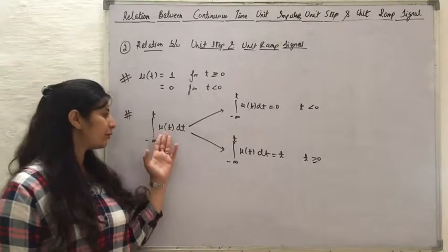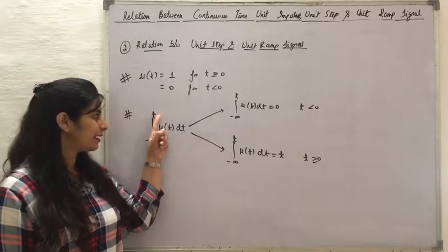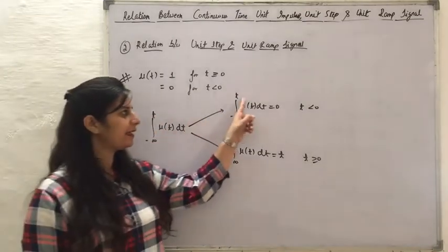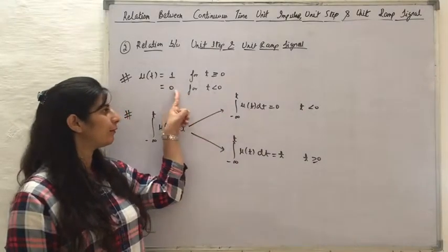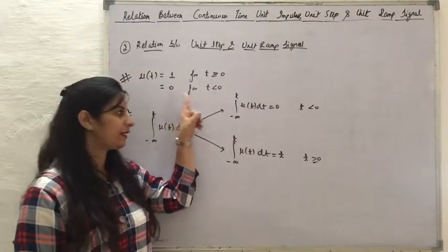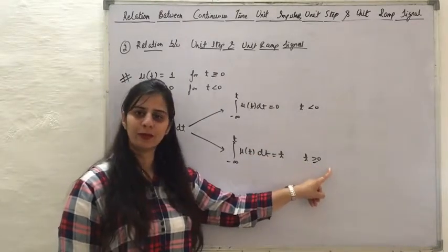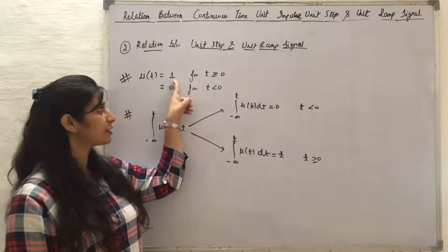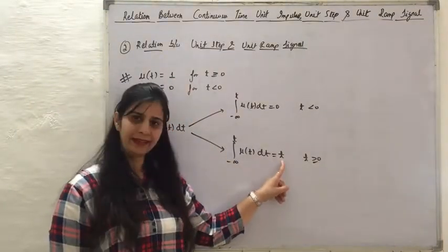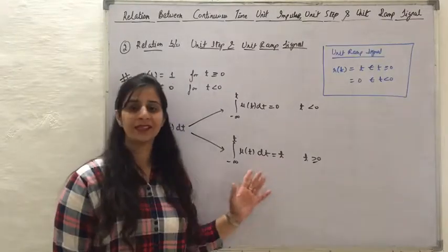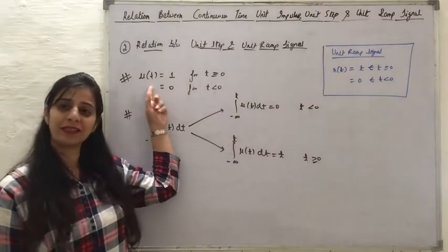When we apply integration on this unit step signal with a limit t: when t is less than 0, the value of the function is 0, so the integration will also be equal to 0. When t is greater than or equal to 0, the value of the function is 1, so when we integrate it with respect to time, we will get t. This is the result obtained after applying integration on a unit step signal with a limit t.